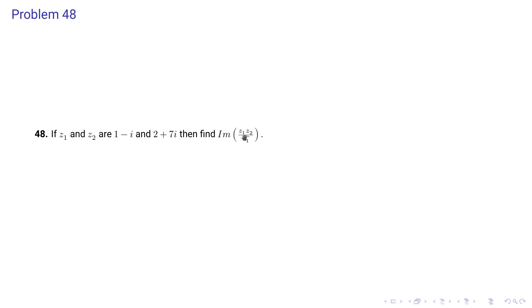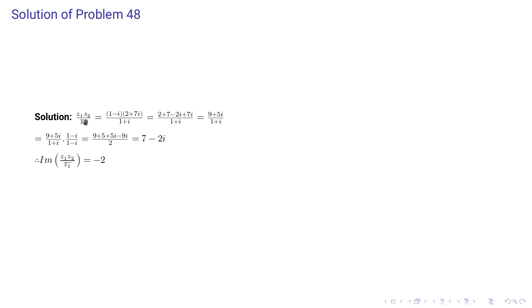Problem 48: If z1 = 1-i and z2 = 2+7i, find Im(z1z2 / z1̄). Here z1̄ = 1+i. We compute z1×z2 = (1-i)(2+7i) = 9+5i. Dividing by z1̄ = 1+i and multiplying by conjugate (1-i), we get 7-2i. Therefore the imaginary part is -2.